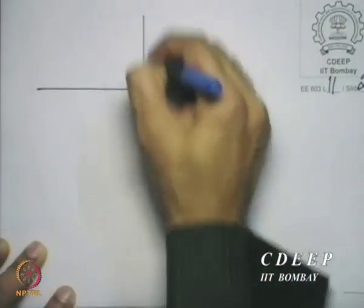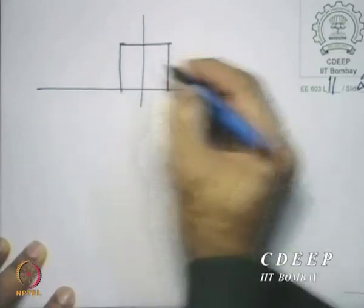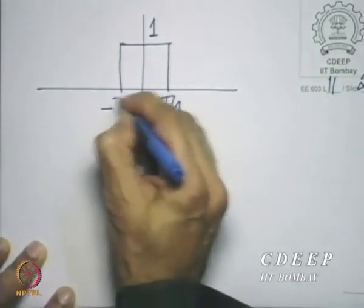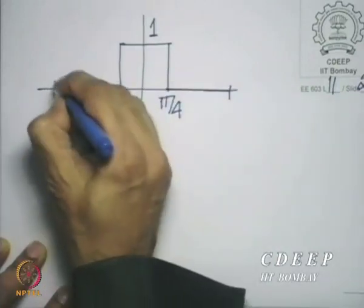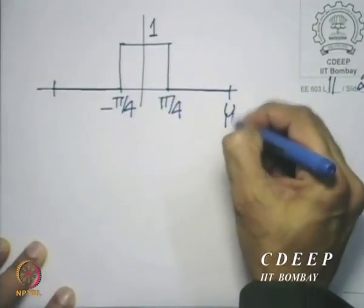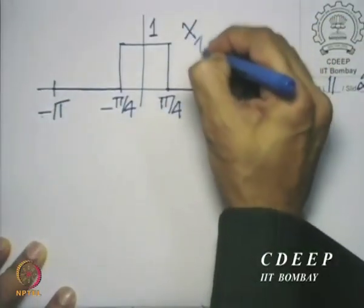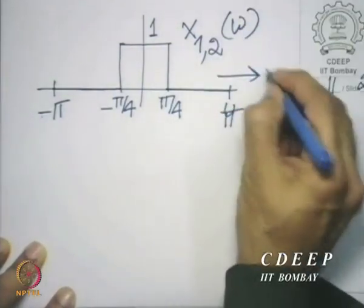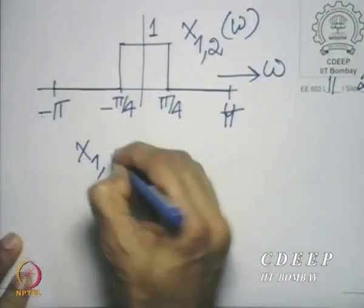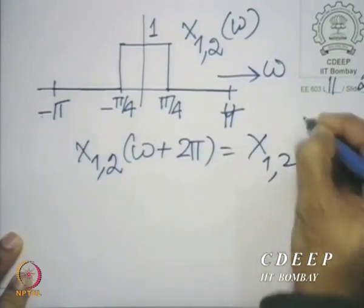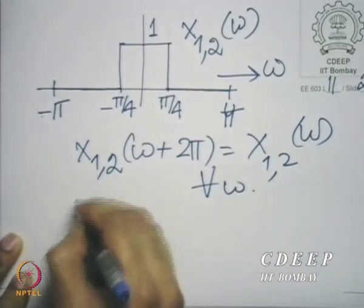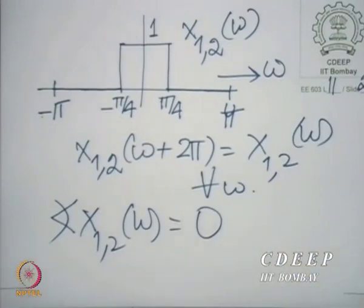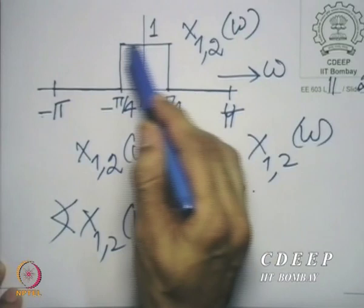Let us take an example to illustrate this idea. Take the very simple DTFT which is 1 between −π/4 and +π/4, and 0 elsewhere, with zero phase. We will take this to be both X1(ω) and X2(ω). So X1,2(ω + 2π) = X1,2(ω) for all ω, the angle is 0, the magnitude is 1 between −π/4 and +π/4, and 0 outside.